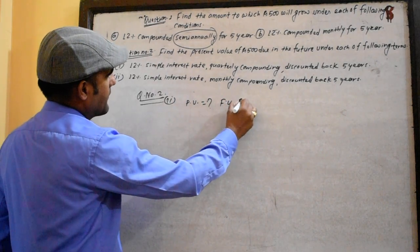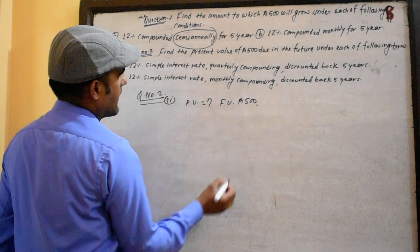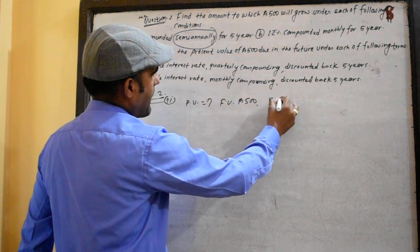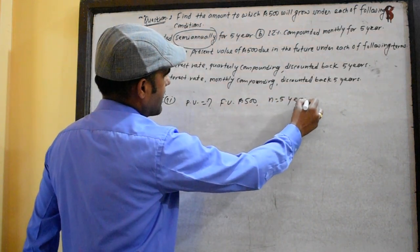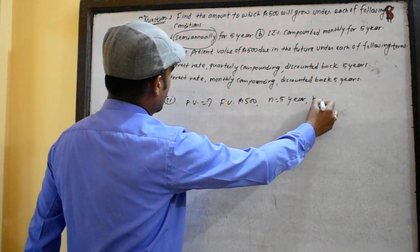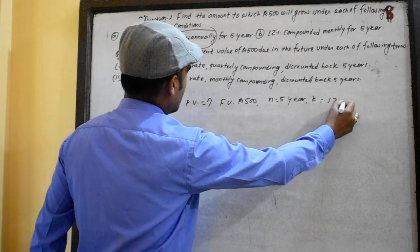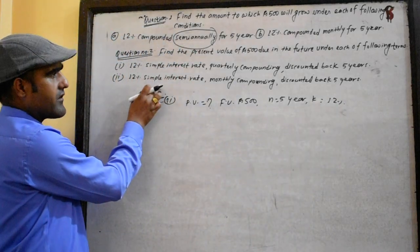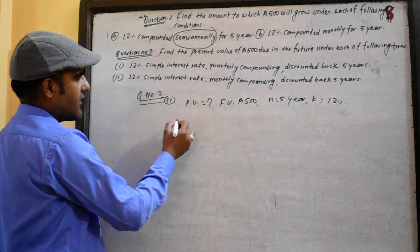The future value is 500. n is 5 years. k is 12%. Now we will apply monthly compounding: k per period equals 12 divided by 12 equals 1%, and n equals 5 times 12 equals 60.